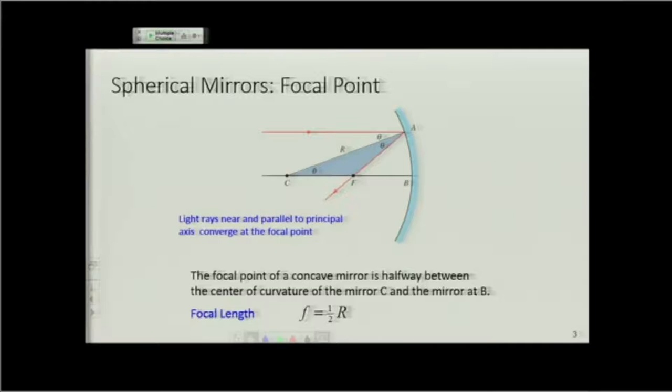So any ray that hits the mirror is going to bounce off the mirror and move towards the principal axis. If I have a parallel ray coming, it's moving towards the principal axis. What is the law or behavior obeying at the surface of the mirror? It's the same law of reflection. The incident angle is equal to the reflected angle.